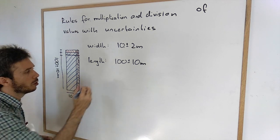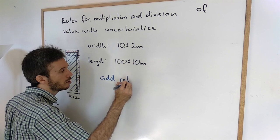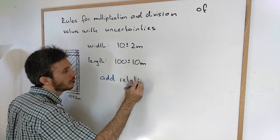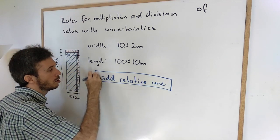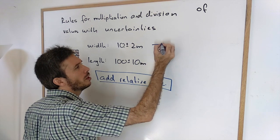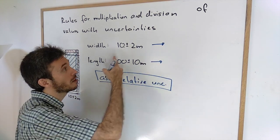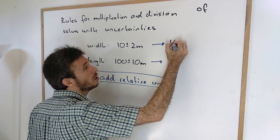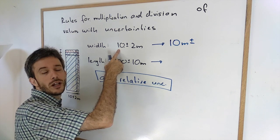So in this case, what we do is we add the relative uncertainties. This is actually why we have relative uncertainties. So first step, if you do this, you have to transform your absolute uncertainties into relative ones. So 10 meters plus minus 2 divided by 10 times 100 percent gives me 20 percent.